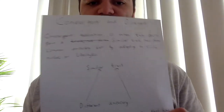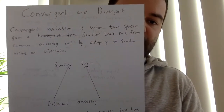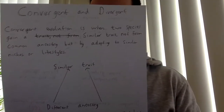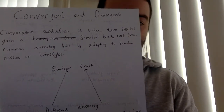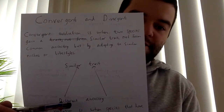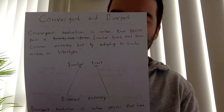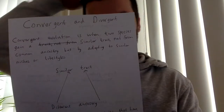Convergent evolution is basically when two species gain a similar trait, not from common ancestry, but by adopting similar niches or lifestyles. That's quite similar to the idea of an analogous structure that we looked at in a previous lesson. The individuals get a similar trait but they've come from different ancestry. They begin differently and become more similar over time, not because they share a recent common relative, but because they are adapting to similar lifestyles.